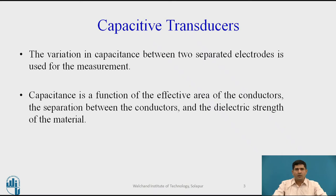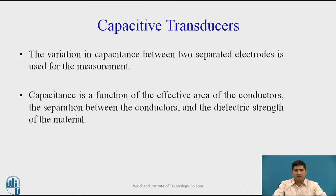Capacitive transducers are based on the fact that a variation in capacitance between two separated electrodes is used for measurement. Capacitance is thus a function of the effective area of the conductors, the separation between the conductors, and the dielectric strength of the material.